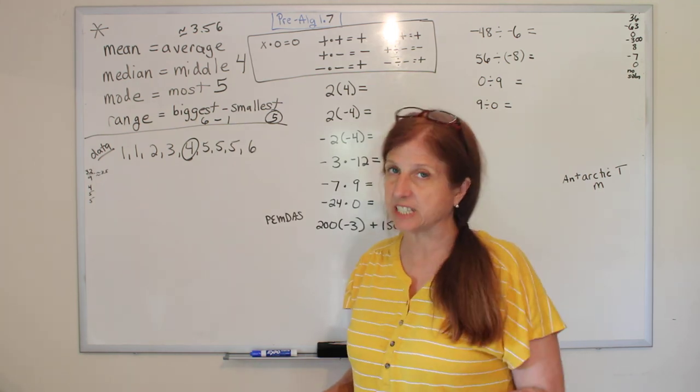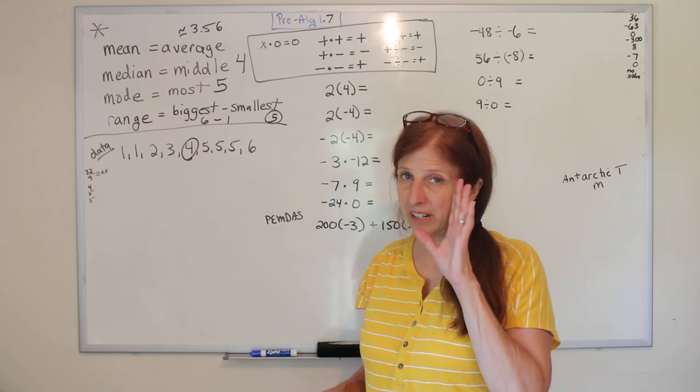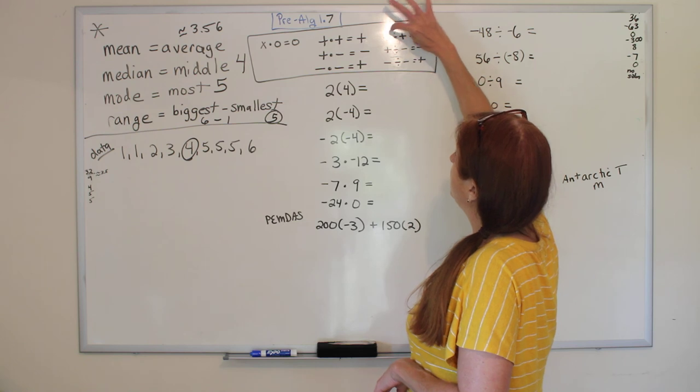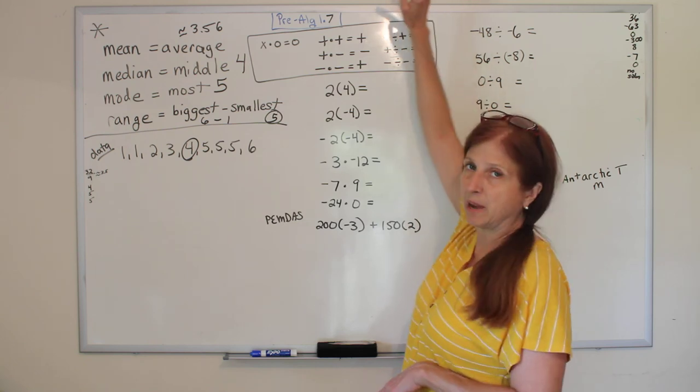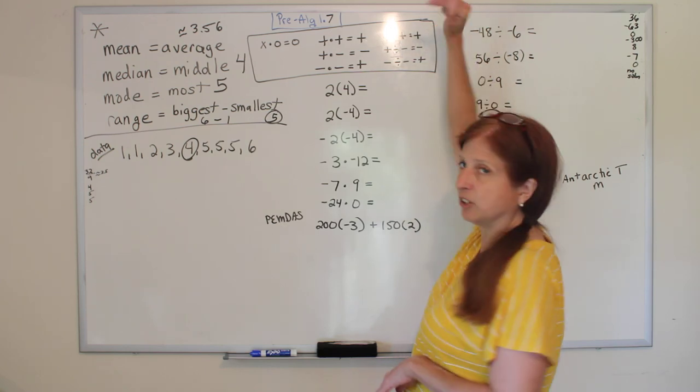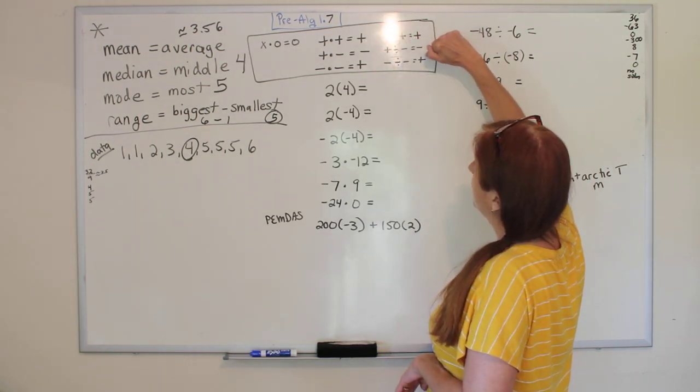All right, same is true for dividing. If you divide one positive number by another, you get a positive. A positive by a negative, you get a negative. And if you divide one negative by another, it weirdly makes a positive, because two negatives make a positive.